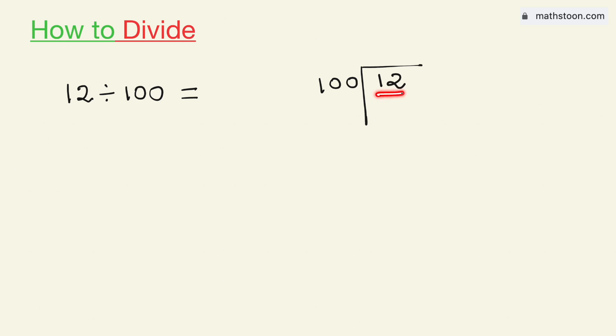Since the number 12 is less than 100, we will borrow one zero and put a decimal here. We know that 100 times 1 is 100, subtract we get 20.